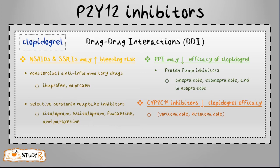SSRIs are commonly used to treat depression; a few examples are citalopram, escitalopram, fluoxetine, and paroxetine. PPIs may decrease the efficacy of clopidogrel; some of these are available over the counter — omeprazole, esomeprazole, and lansoprazole. Proton pump inhibitors (PPIs) reduce acid production by irreversibly blocking the hydrogen-potassium ATPase enzyme located in the parietal cells of the stomach walls.